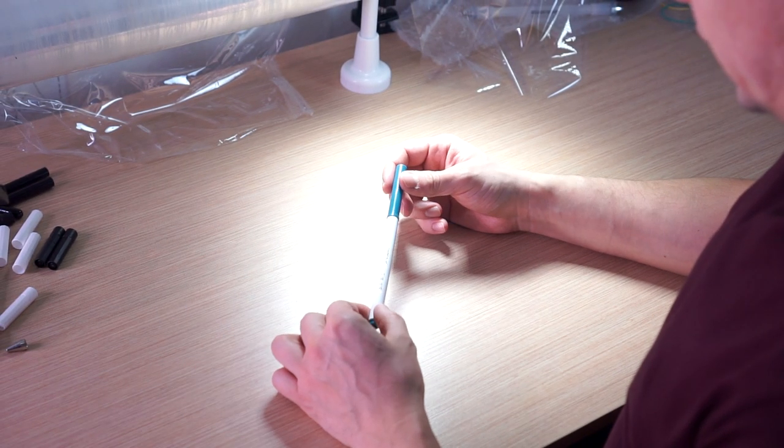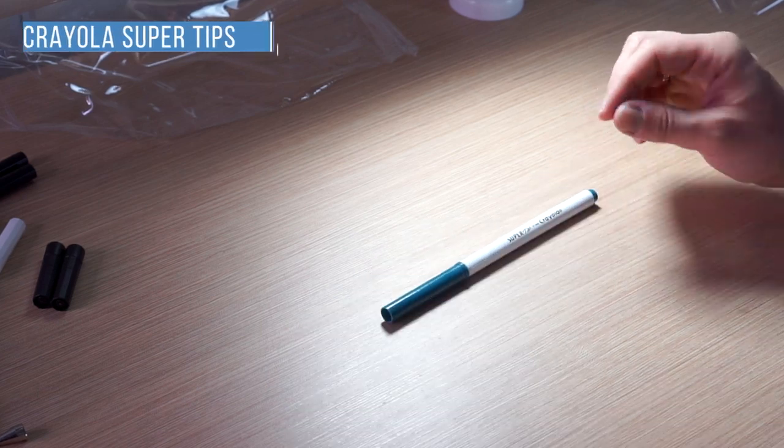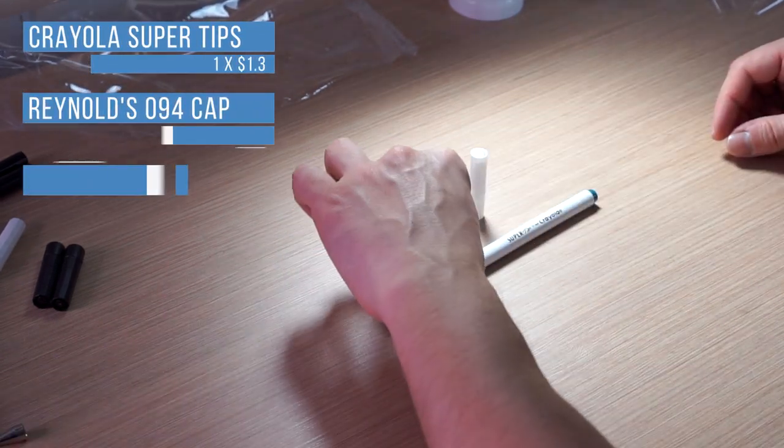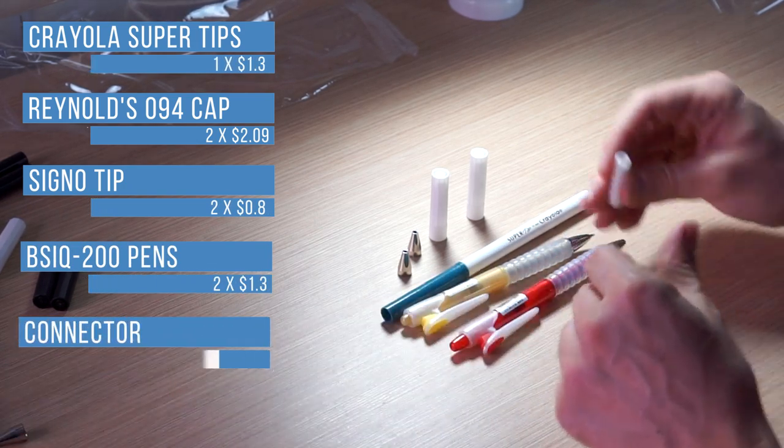I will make white Flying Panda and for that I will take white Crayola Buddy Super Tips, two Reynold Caps, two Signo Tips, two BSIQ 200 for grips and one plug.